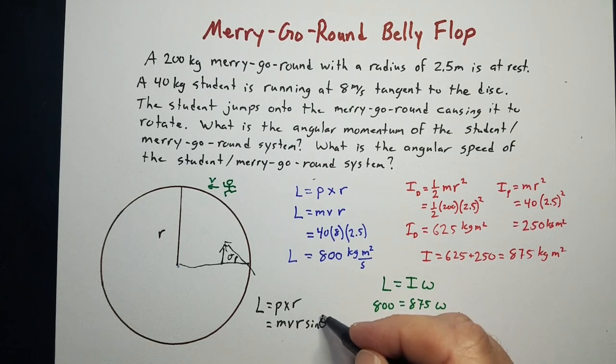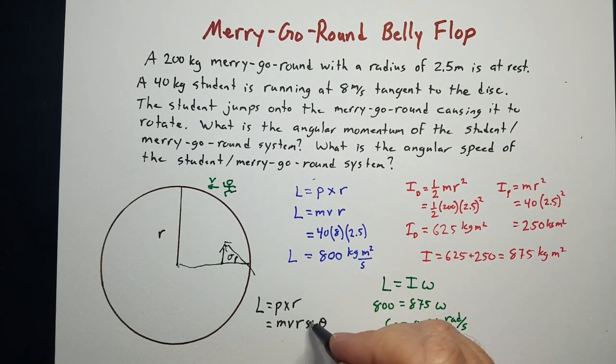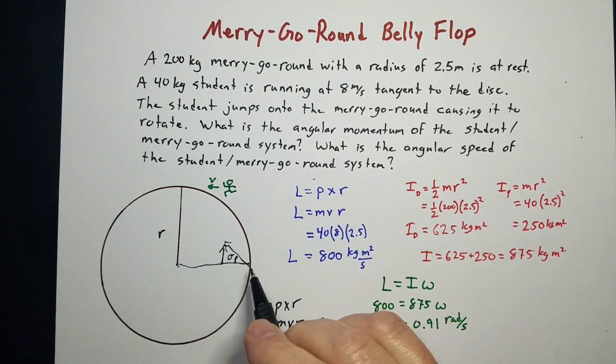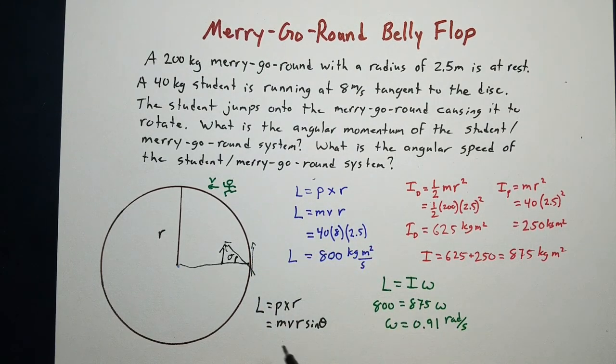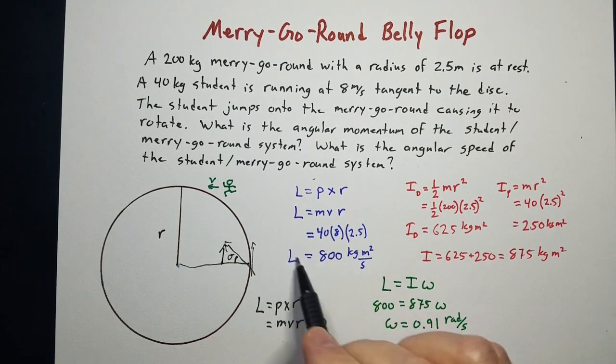So if you come straight in, the angle would be 0 degrees. Sine of 0 is 0, so nothing is done. Sine of 90 degrees, where it hits like that, is where it's optimized. But that's just in case he doesn't land tangent to the circle. Otherwise, it's just this right here.